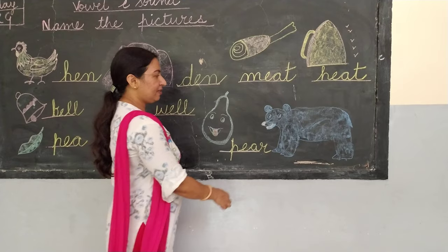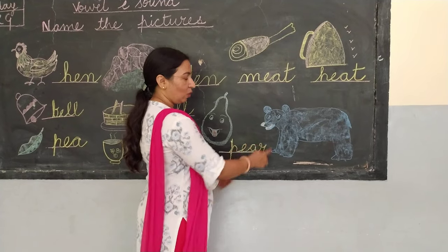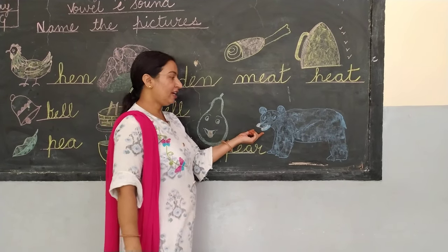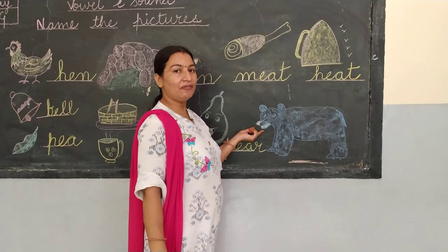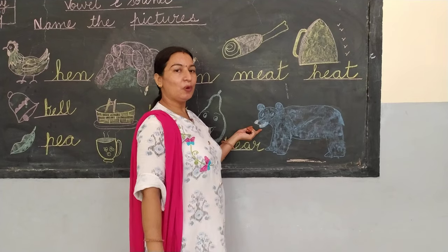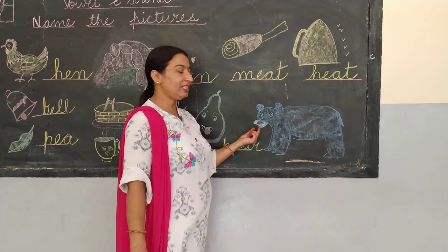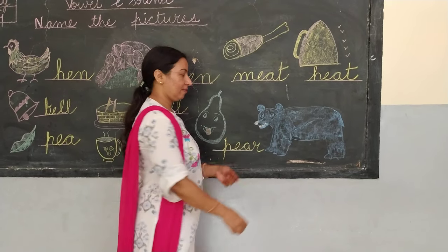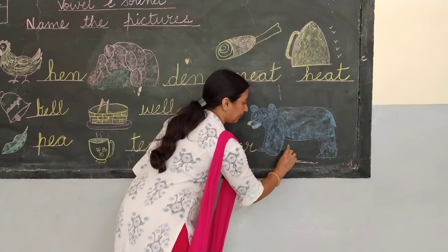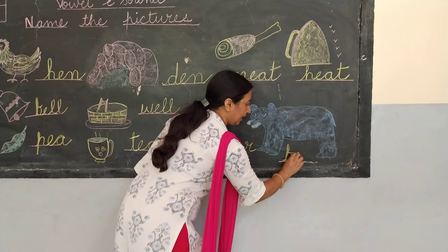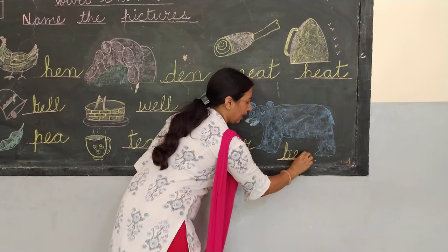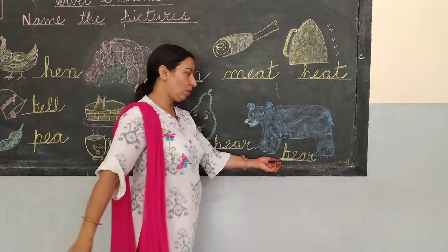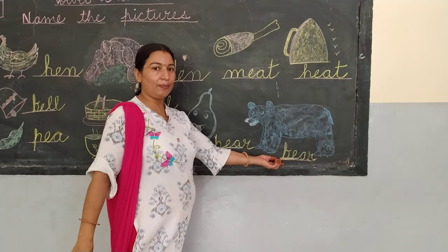Now next — what is this? We have already learned a poem about this animal. It is a bear. The spelling of bear is B-E-A-R, bear. This is the bear.